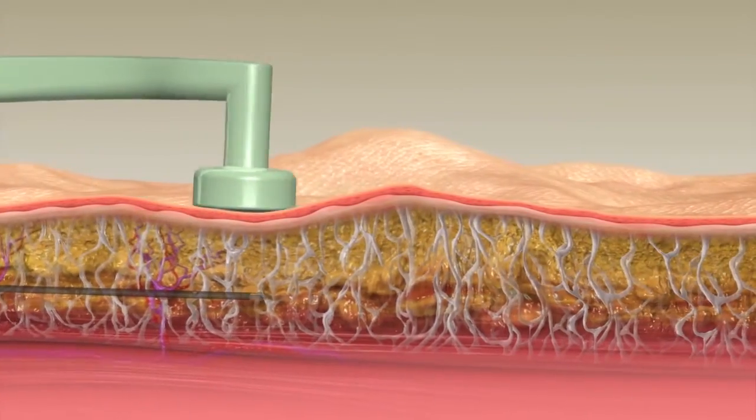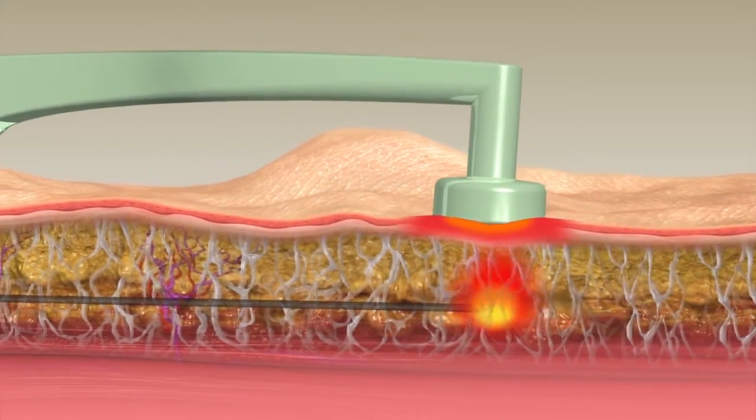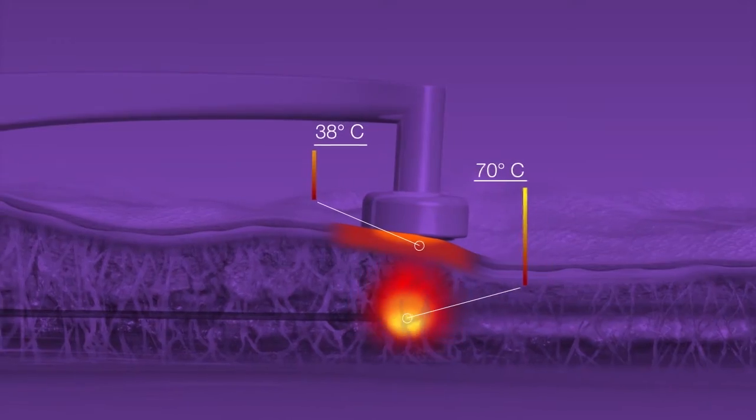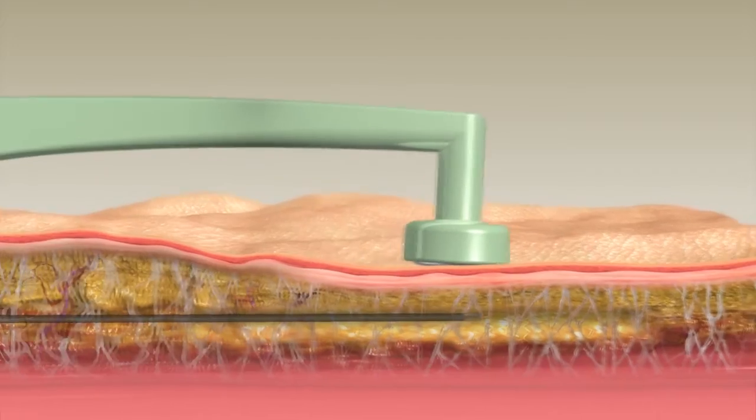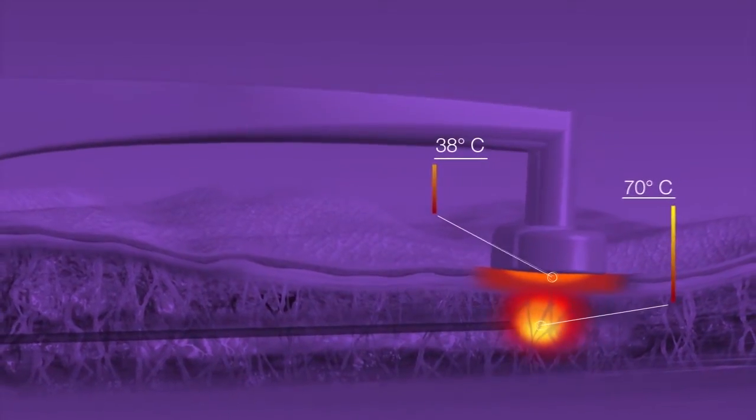The body-tight contouring procedure uses radiofrequency energy for internal fat lipolysis and external collagen contraction. RF energy flows from the internal cannula toward the external electrode placed on the skin surface. RF power is regulated based upon online measurements of skin temperature and tissue impedance.